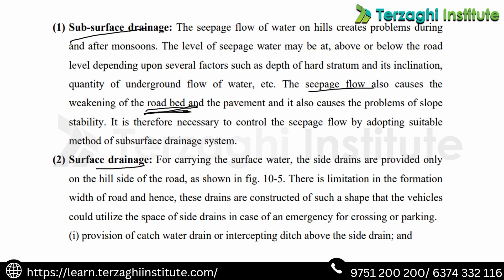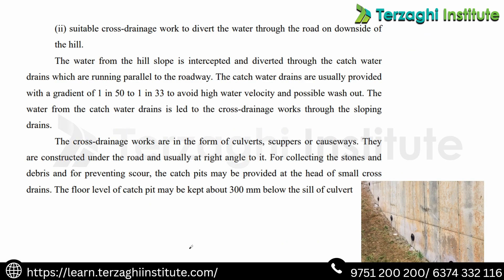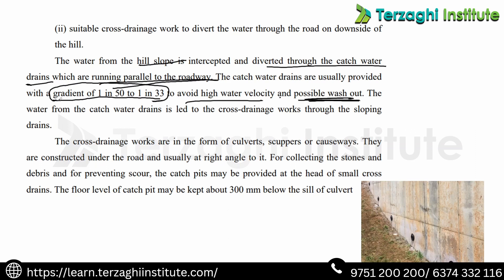For surface drainage, after the catch drainage, the water will be segregated and removed. Both surface drainage and subsurface drainage are provided. When we select catch drainage or gullies, we provide them at suitable intervals. In the hillside, water is intercepted and diverted through catch water drains running parallel to the roadway. Note that the catch water drain gradient is 1 in 50 to 1 in 33, to avoid high water velocity and possible washout.